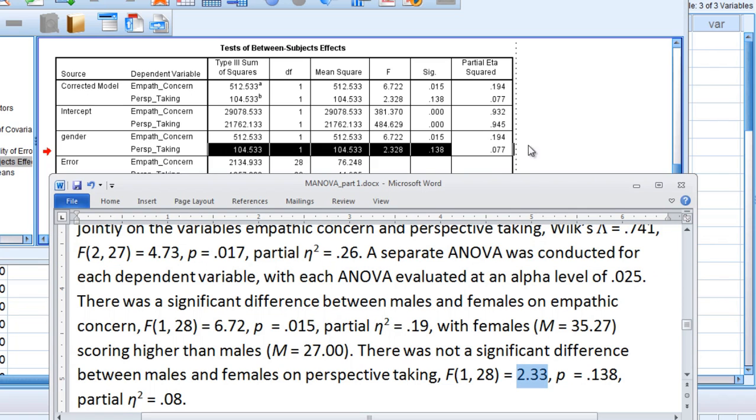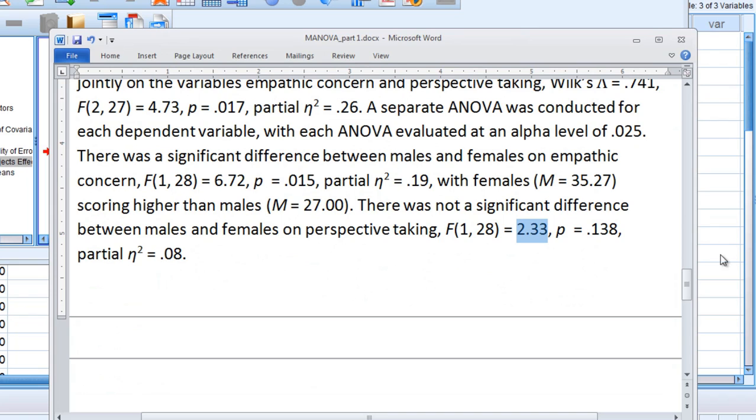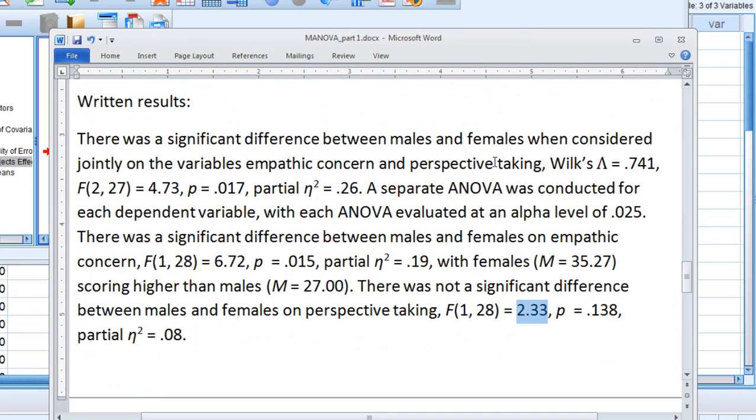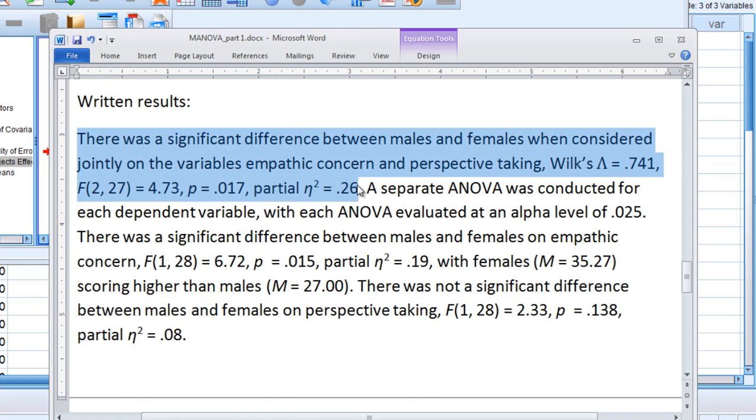So the written results in summary - once again we have our first sentence. This is just one of many ways you could do it. But the first sentence shows the results of the MANOVA, and then after that I talked about the ANOVA.